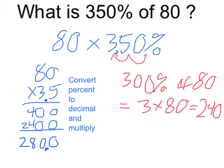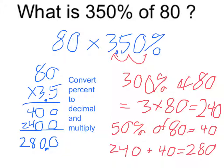And then we also have 50% of 80. 50% is simply half, so 50% of 80 is 40. 300% is 240, 50% is 40, so then when I add them together, I get 280.